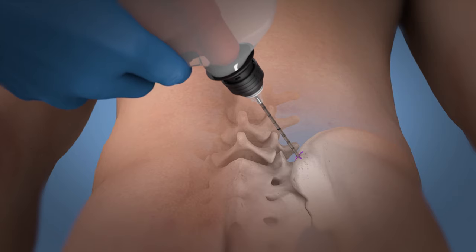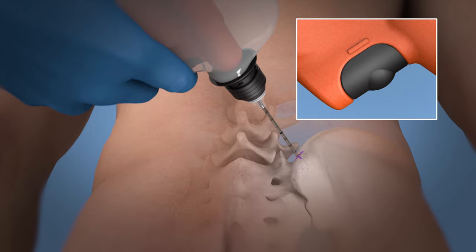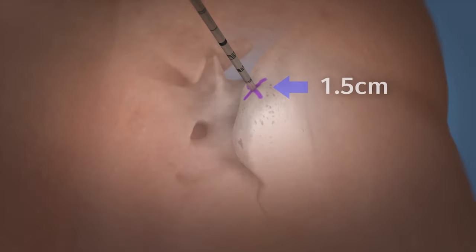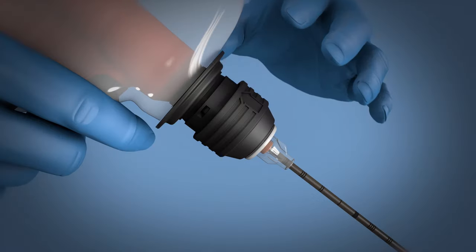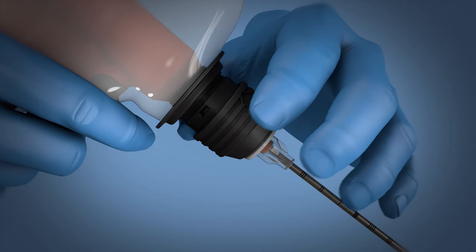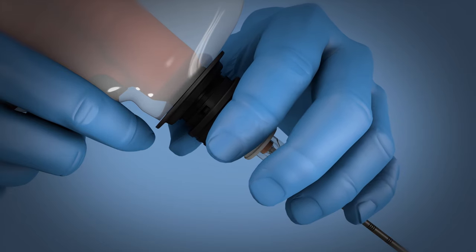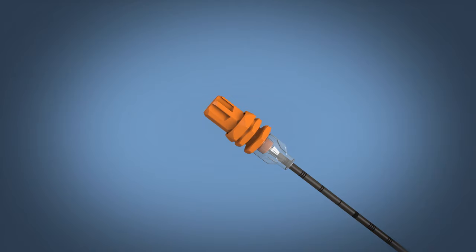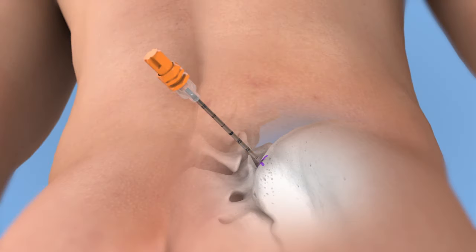Release the trigger when a change in resistance is felt or a depth of one to one point five centimeters is reached. Disconnect the driver from the needle by lifting up on the black collar on the connector and lifting the driver up and off the needle hub without dislodging the cannula.